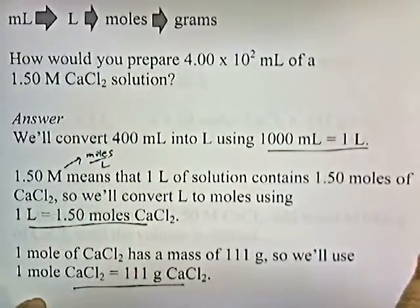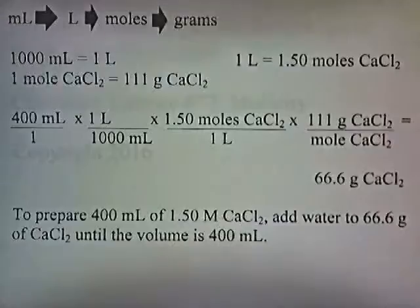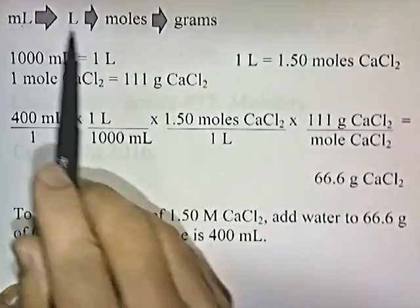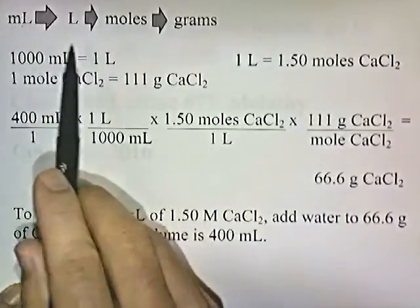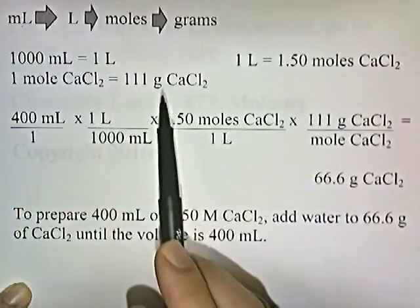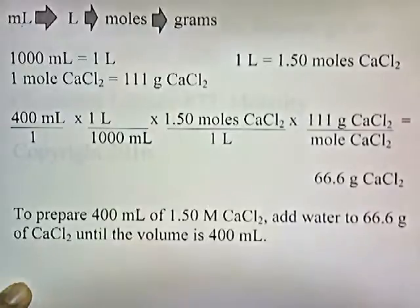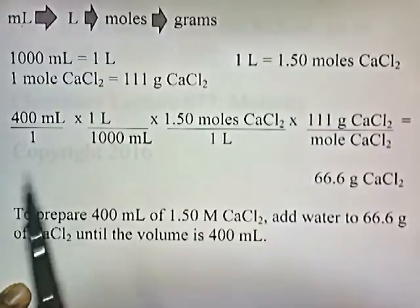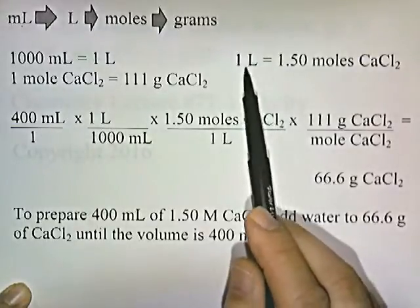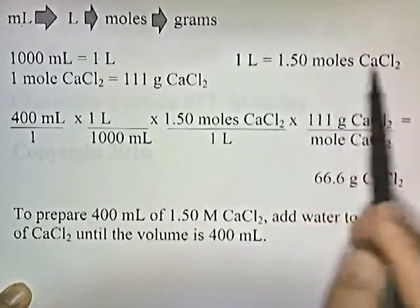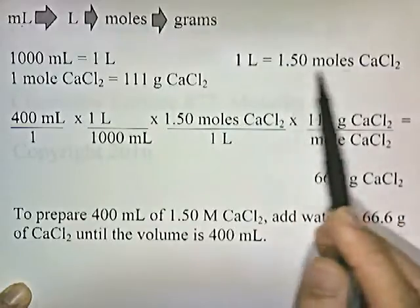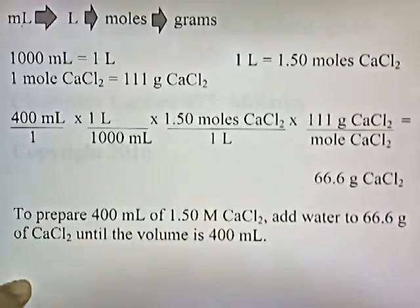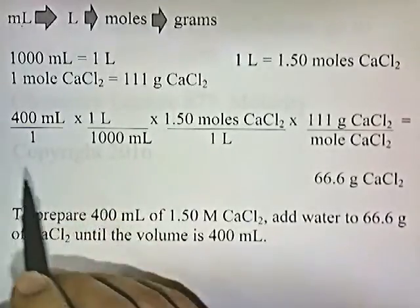Here's the overview of how we solve it. We take the volume given, convert it into liters, use the concentration to convert liters to moles, then convert moles into grams. To convert milliliters into liters we use 1,000 mL = 1 L. To convert liters into moles we use the 1.5 molar concentration — capital M means moles per liter. To convert moles into grams we use the molar mass equality. We want 400 milliliters of solution.